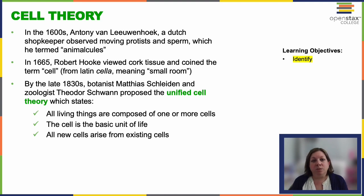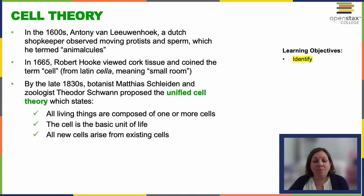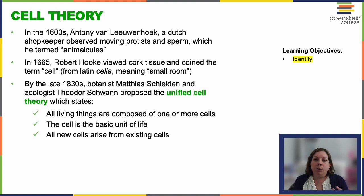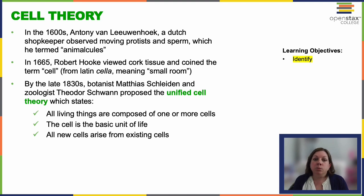There was no cell theory. People didn't know what caused diseases. So it takes a little while for that to all be formalized, but eventually by the 19th century we have this formalized, unified cell theory, which states that all living organisms are composed of one or more cells, the cell is the basic unit of structure and organization in all organisms, and cells arise from preexisting cells through cell division.